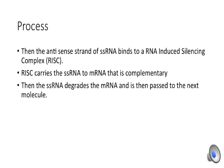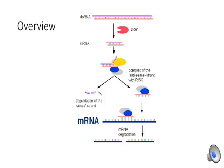The RISC carries the ssRNA to the mRNA that is complementary. Then the ssRNA degrades the mRNA and is passed to the next molecule. Here is an image that might make this clearer: the dsRNA is broken down by the Dicer enzyme into 20-nucleotide strands, which then bind to the complementary strand and undergo a complex with the antisense strand and RISC. This strand then binds to the mRNA, which degrades and breaks it up.